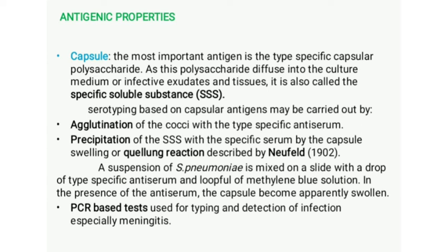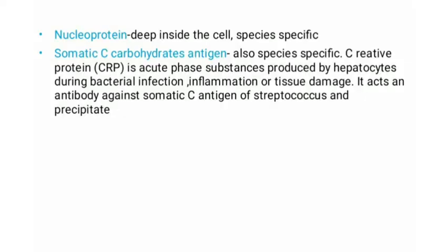Serotyping methods include agglutination, precipitation, the capsule swelling or Quellung reaction, and PCR-based tests. In the Quellung reaction, a suspension of S. pneumoniae is mixed on a slide with type-specific antiserum and methylene blue; the capsule appears to swell in the presence of antiserum. PCR-based tests show higher sensitivity, especially in detecting meningitis. Besides the capsule, S. pneumoniae also contains nucleoprotein and somatic C carbohydrate antigen.